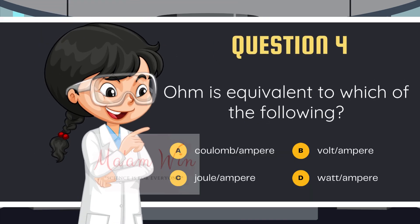Question number 4. Ohm is equivalent to which of the following? Letter A, coulomb per ampere. Letter B, volt per ampere. Letter C, volt per ampere. Letter D, watt per ampere.